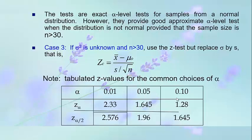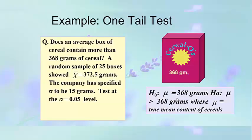Example one — one-tailed test: Does an average box of cereal contain more than 368 grams of cereal? A random sample of 25 boxes shows a mean equal to 372.5 grams. The company has specified the standard deviation to be 15 grams. Test at the alpha = 0.05 level. The null hypothesis is mu = 368 grams; the alternative hypothesis is mu > 368 grams.